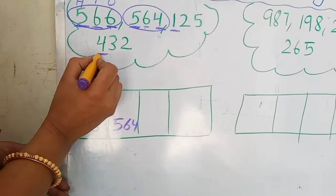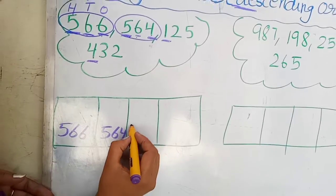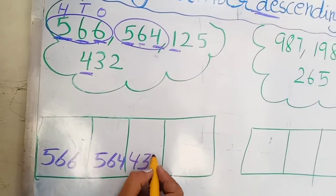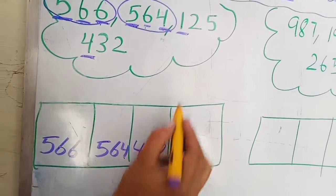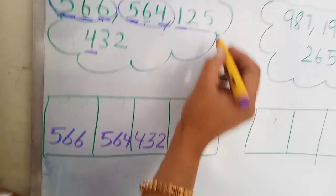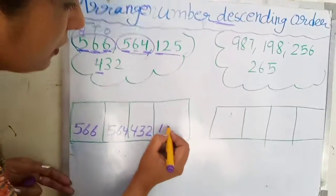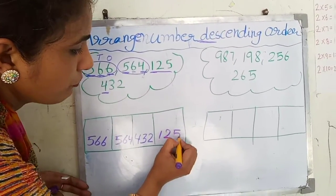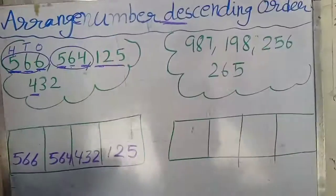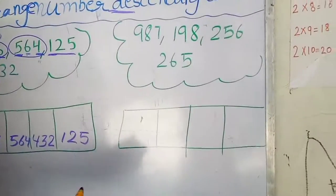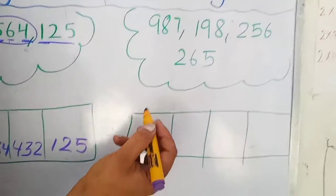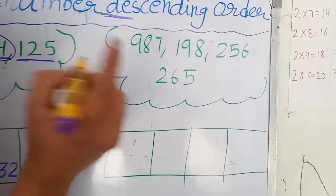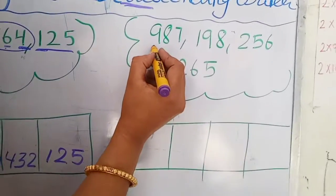Now we check the next numbers. Five comes before four in the hundreds, so we write down 432 next, and the last is 125. Now the next sum is here, so we also check the hundreds first.